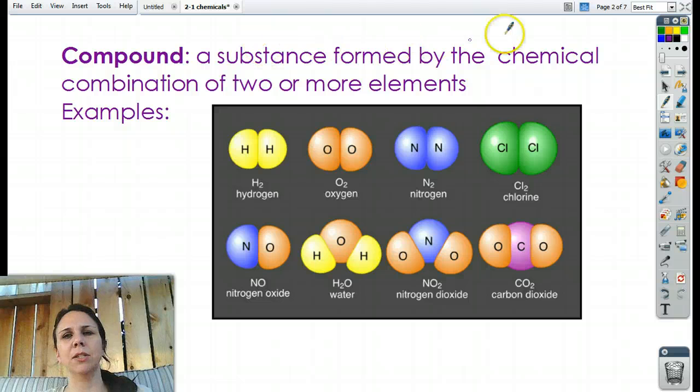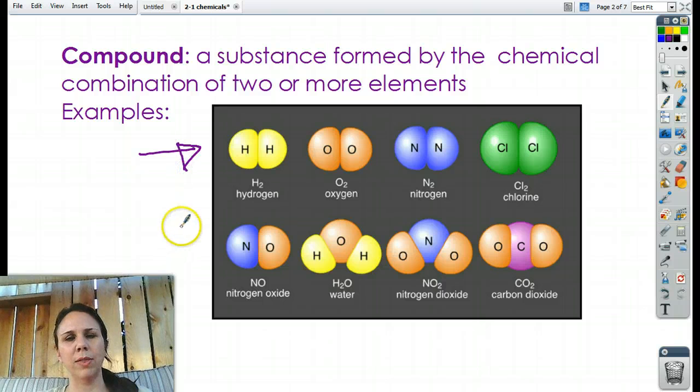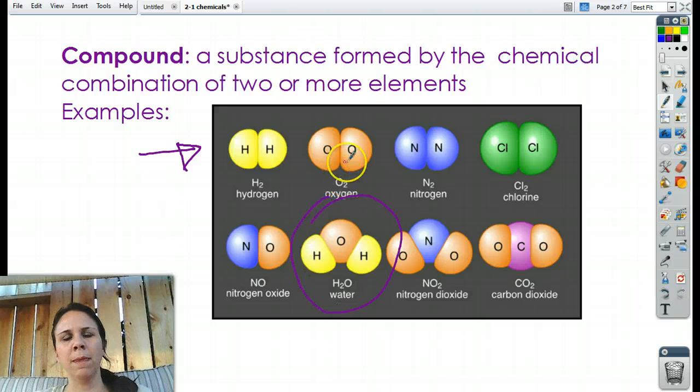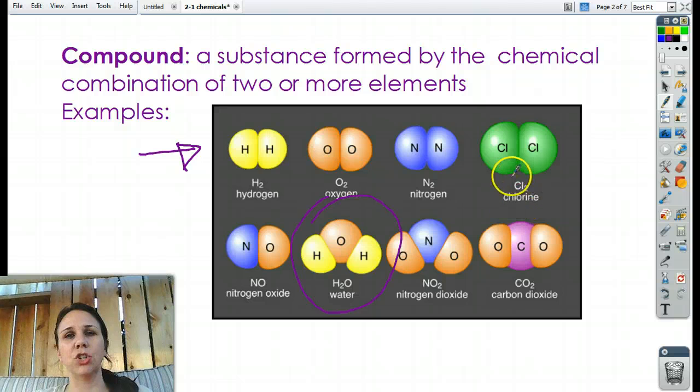So a compound is just any substance that's formed by the chemical combination of two or more elements. These are some examples. No, you don't need to write these down or memorize every single one, except for water. Water's probably a good one to know.